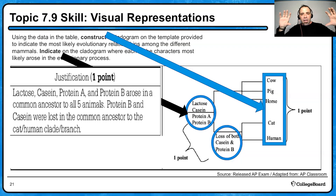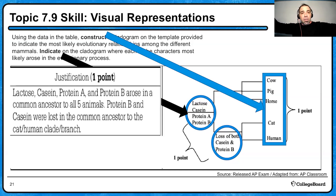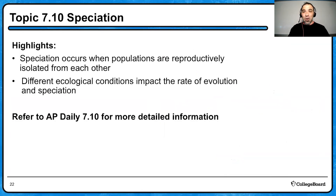If you're still struggling with cladograms, go back and watch the video for topic 7.9. These are a very important part of this unit because creating a cladogram or phylogenetic tree requires you to look at visual data, think back on previous knowledge, and apply it. Strongly suggest reviewing cladograms and watching 7.9. Moving on — topic 7.10, speciation.